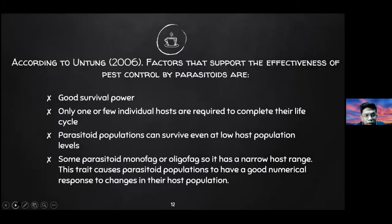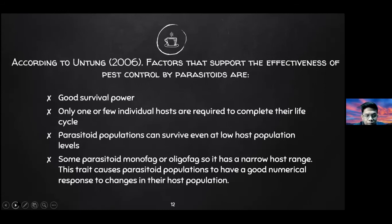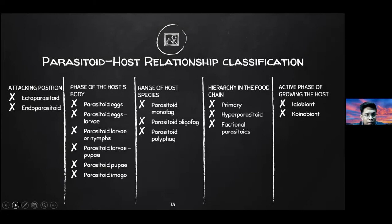According to Untung 2006, factors that support the effectiveness of pest control by parasitoids are: good survival power, only one or few individual hosts are required to complete their life cycle, parasitoid populations can survive even at low host population levels, and some parasitoids are monophagous or oligophagous, so they have a narrow host range. This trait causes parasitoid populations to have a good numerical response to changes in their host population.